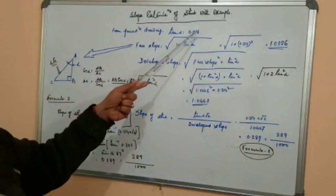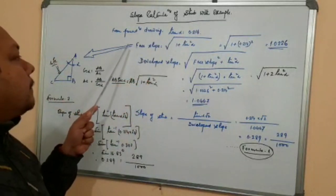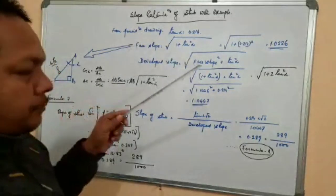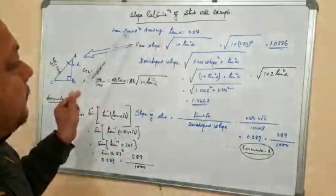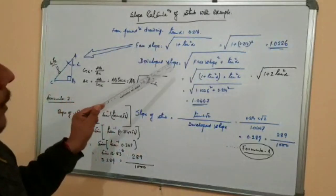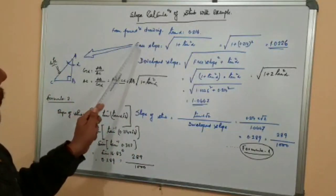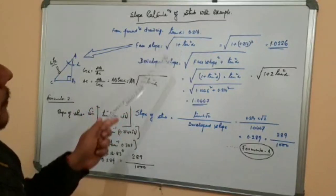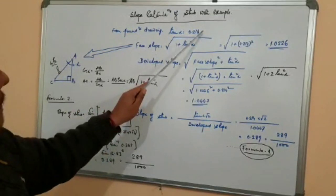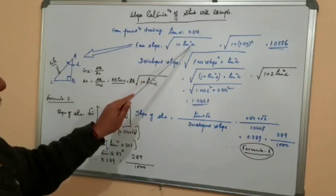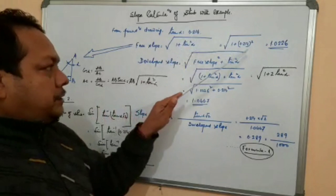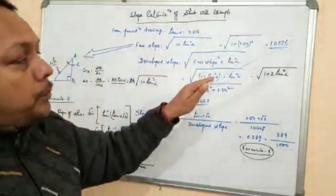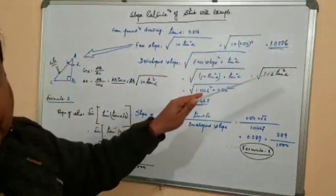To calculate the slope of staff, you must have two slope figures. The first is phase slope. The formula for phase slope is: root over (1 + tan² alpha). Put tan alpha = 0.214 into this formula. Please take a calculator. You will get root over 1.0226.